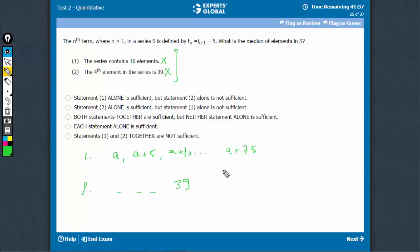When we combine, however, we know that there are 16 terms and the fourth term is 39. So before this should be 34, 29, 24. So we now know the value of a is 24.